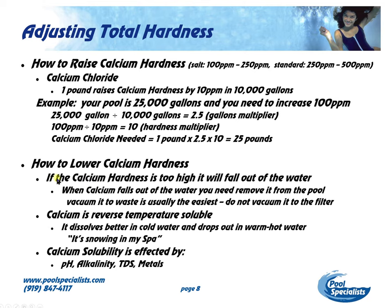If you want to lower the calcium hardness because it's too high, it will fall out of the water. When calcium falls out of the water, you need to remove it from the pool — otherwise it is actually going to calcify on the surface of the pool, and if you have any stains below it, it's going to lock those stains in. The best way to get this out of your water is to vacuum it to waste. Do not vacuum it into the filter because the pressure is going to help redissolve the calcium back into the water, and you're going to have this problem over and over again.